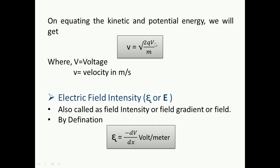These small formulas which I am discussing with you are very important. If you are preparing for competitive examinations, numerical questions based on these small formulas often come in the exam. So be very clear with the notations, units, formula values, and try to take advantage of this video. On equating kinetic and potential energy, we get the formula: small v equals the square root of 2QV divided by M, where capital V represents your voltage and small v represents velocity in meters per second.